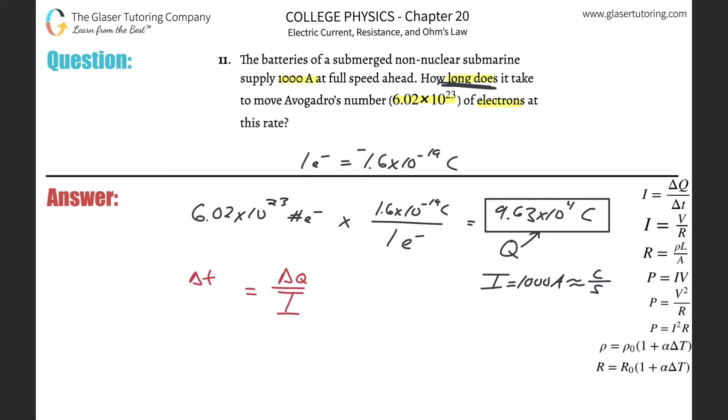Little cross multiplication, and there it is. Coulombs on top: 9.63 times 10 to the fourth, divided by I, which is 1000. So the time is 9.63 times 10 to the fourth divided by 1000, which gives us 96.3 seconds. And that's it.